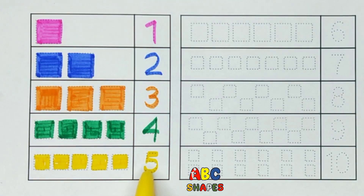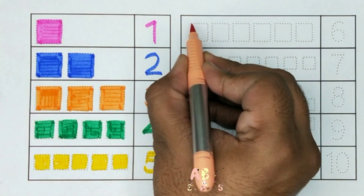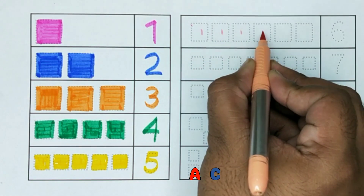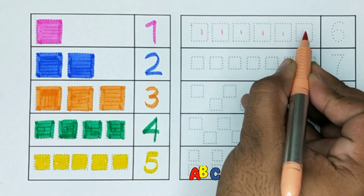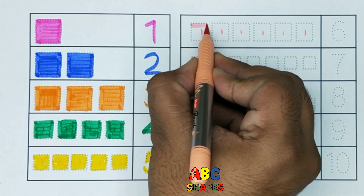This is number 5. Now we have 1, 2, 3, 4, 5, 6 — 6 squares.